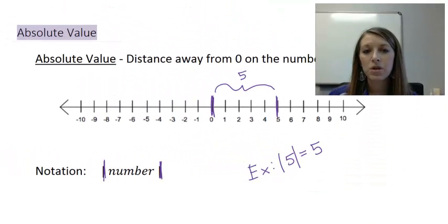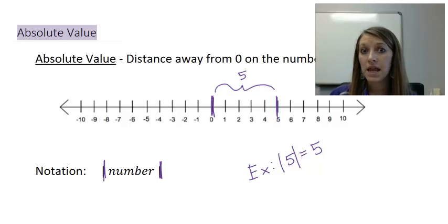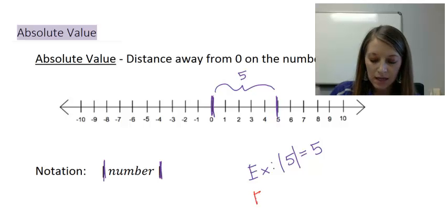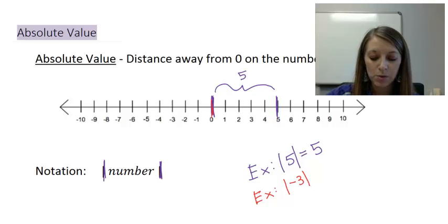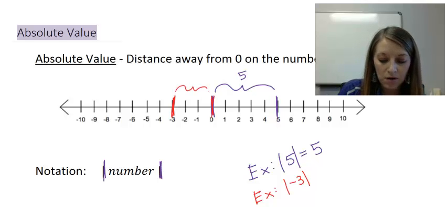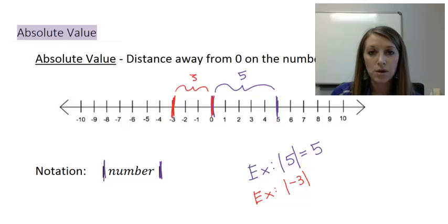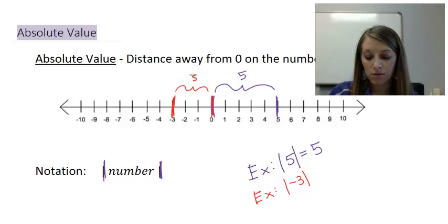That example took the absolute value of a positive number. So what happens if our number is negative? In this example, I want to take the absolute value of negative 3. I want to figure out the distance between 0 and negative 3 on the number line. If I count the number of units away, it is 3 units away, so the absolute value of negative 3 is positive 3.